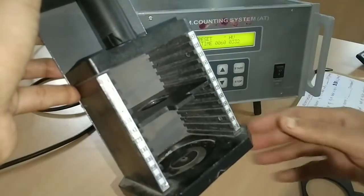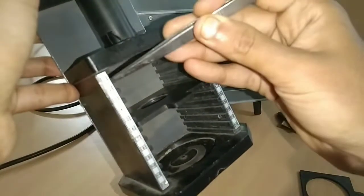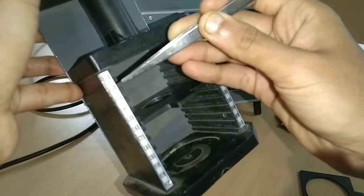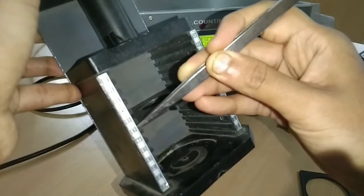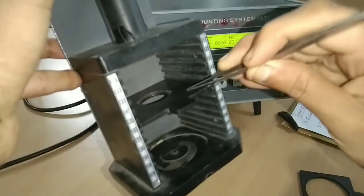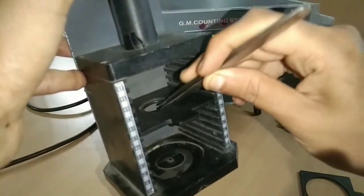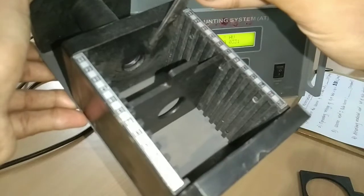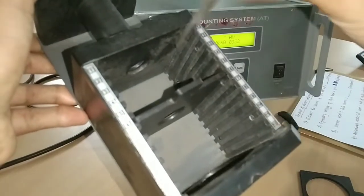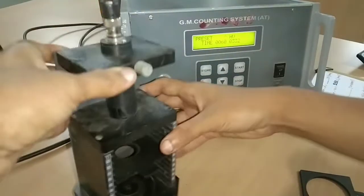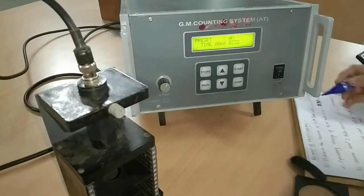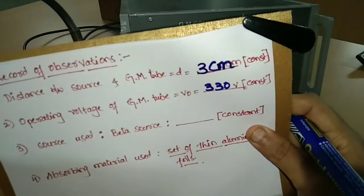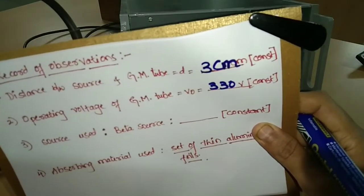I am placing the source tray at the 6th level. The distance from the source tray to the sucking end of the GM tube is 3 centimeters. I have noted this as 3 centimeters and it must be kept constant throughout the experiment.